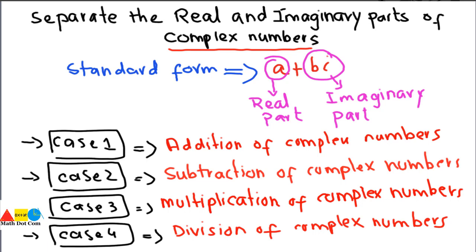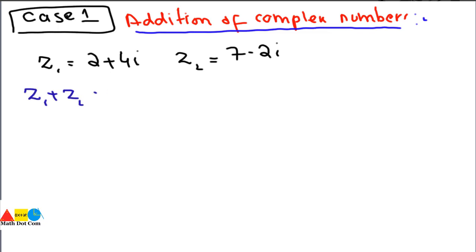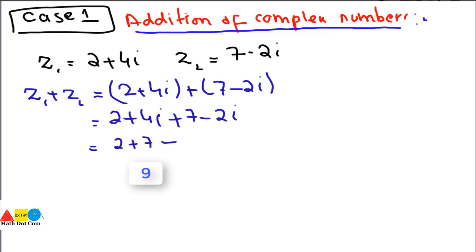Let's start from Case 1 — how you can express complex numbers in standard form when they are adding with each other. Taking an example: z1 plus z2 equals (2 plus 4 iota) plus (7 minus 2 iota). Removing the brackets: 2 plus 4 iota plus 7 minus 2 iota. Combining like terms: 2 plus 7, and 4 iota minus 2 iota equals 2 iota.